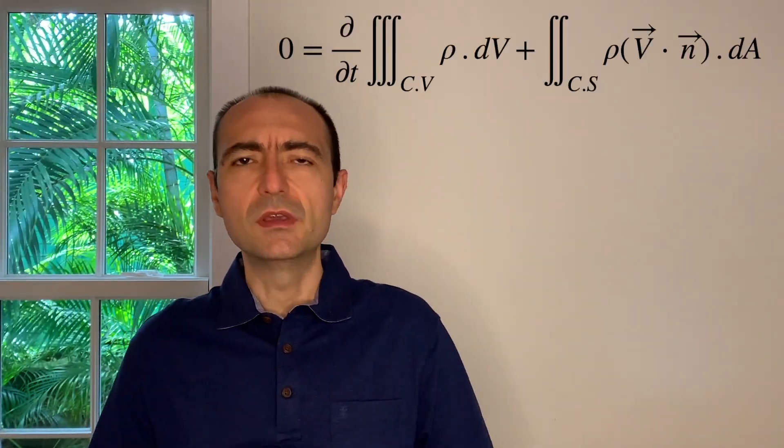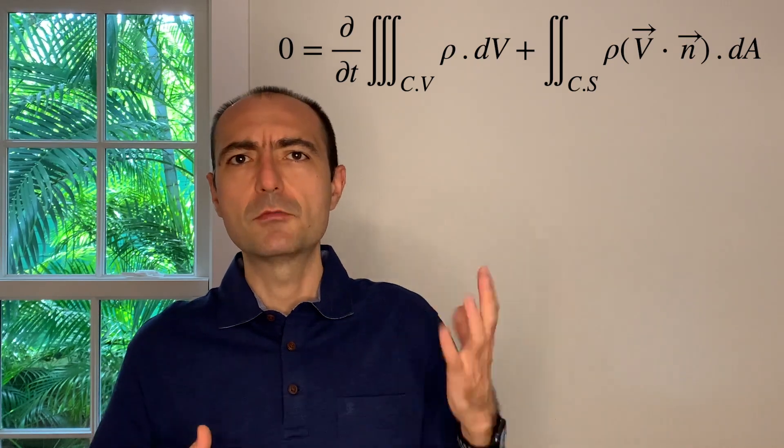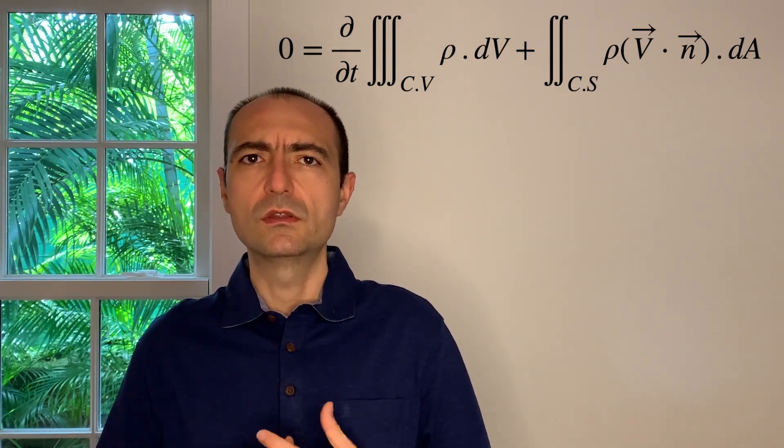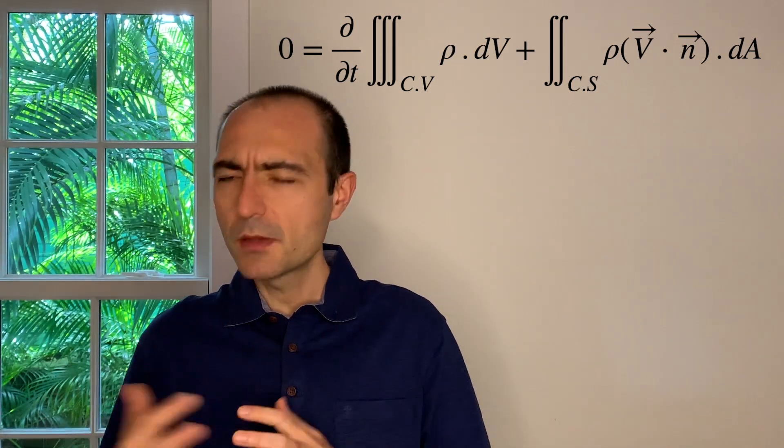So then the dm/dt becomes 0, and I get my final version of the equation for the conservation of mass, or sometimes it's called the continuity equation as well.